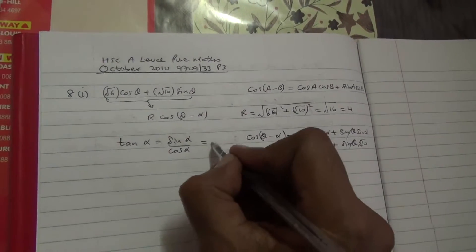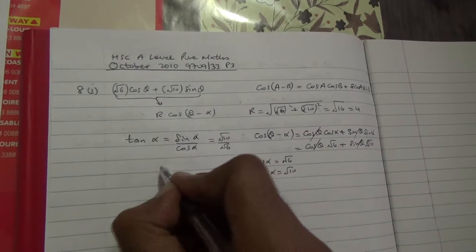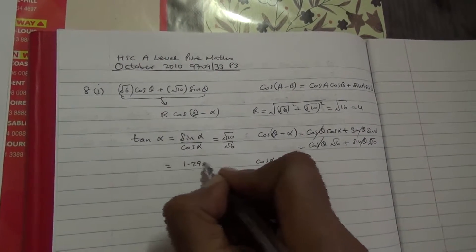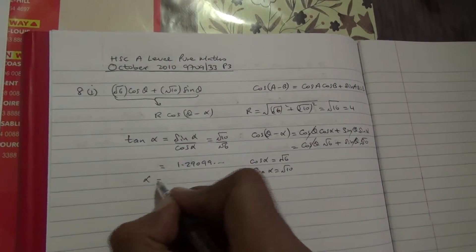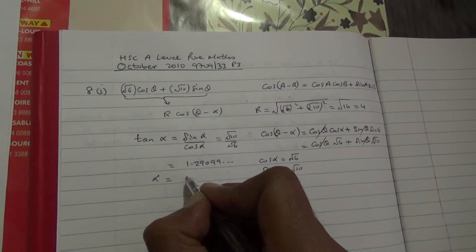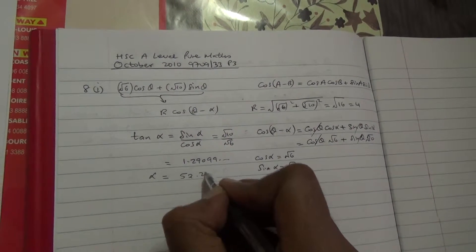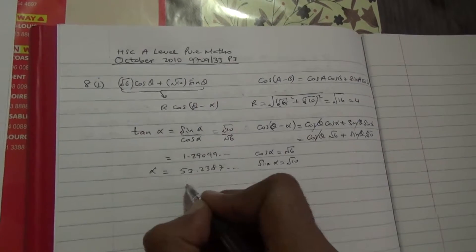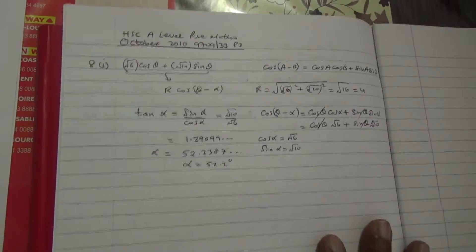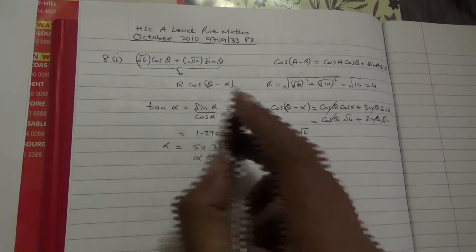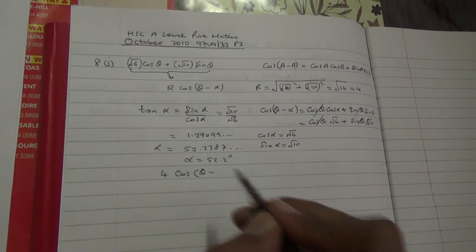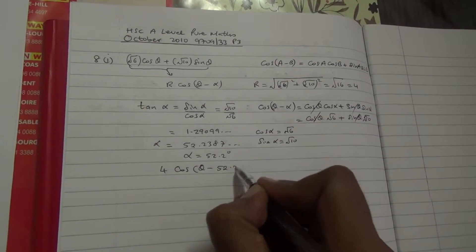In other words, tan alpha equals root 10 over root of 6, which gives approximately 1.2910. Working out the inverse tan in the calculator gives 52.2387 degrees. Therefore, alpha is 52.24 degrees. Hence, the expression in the required form is 4 cos(theta minus 52.24 degrees).